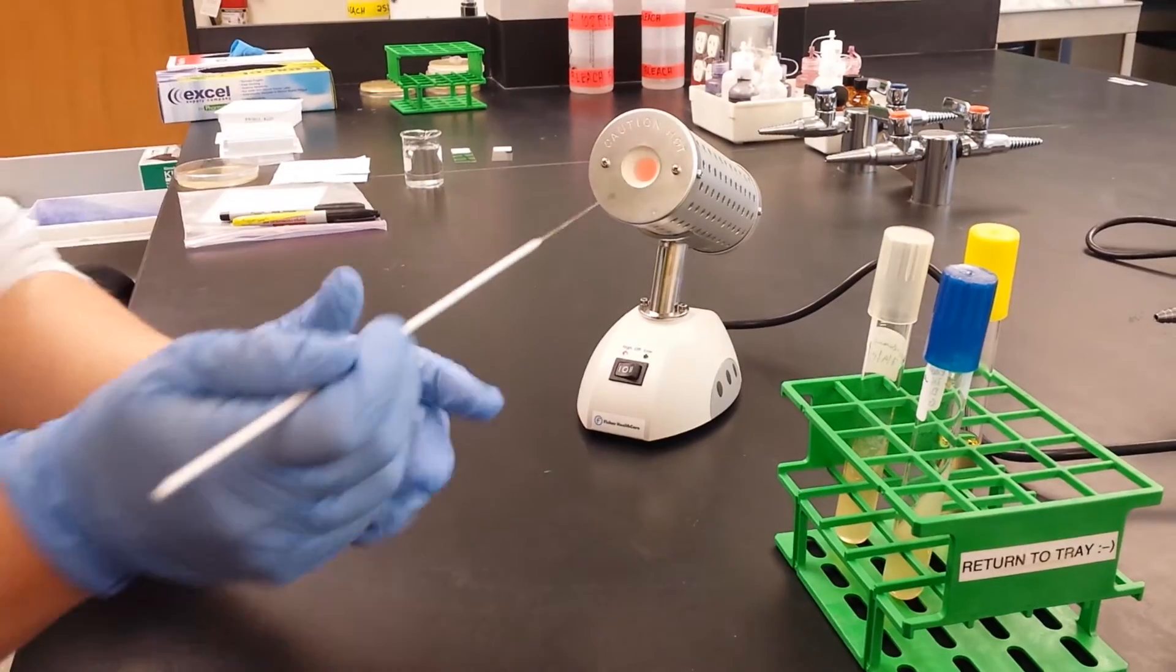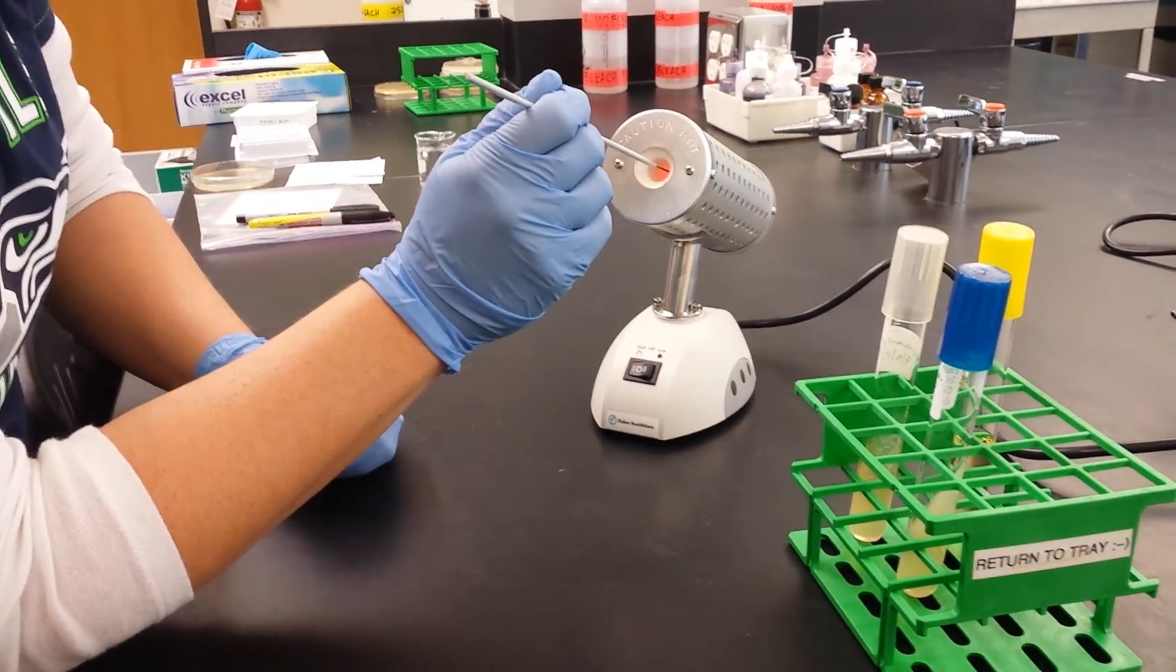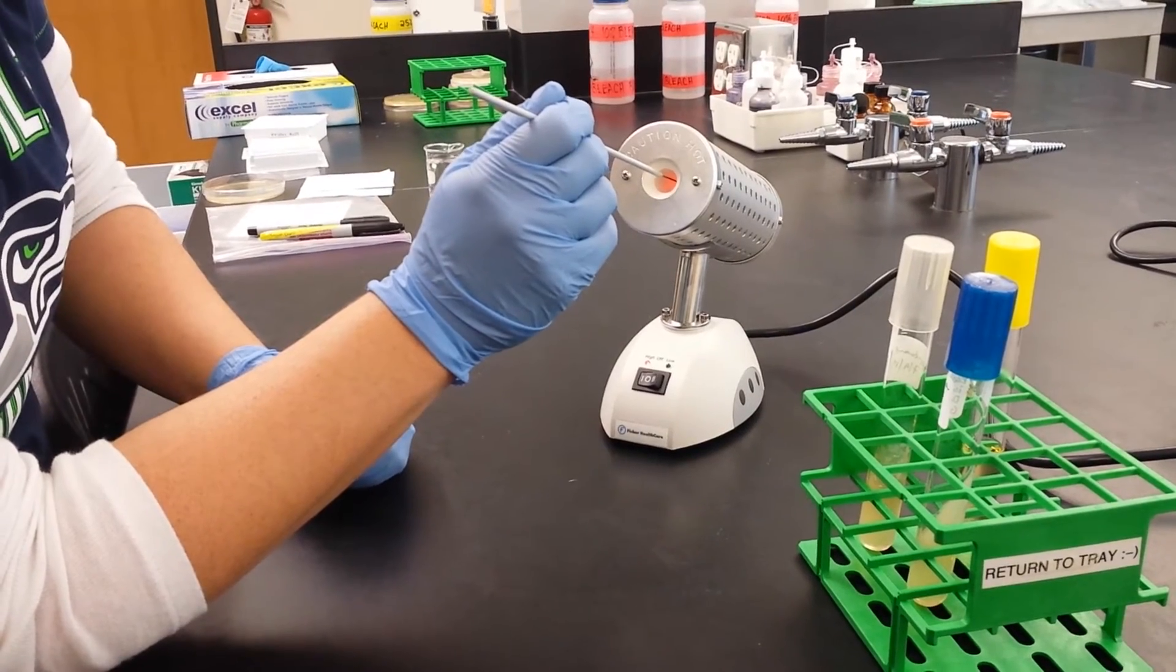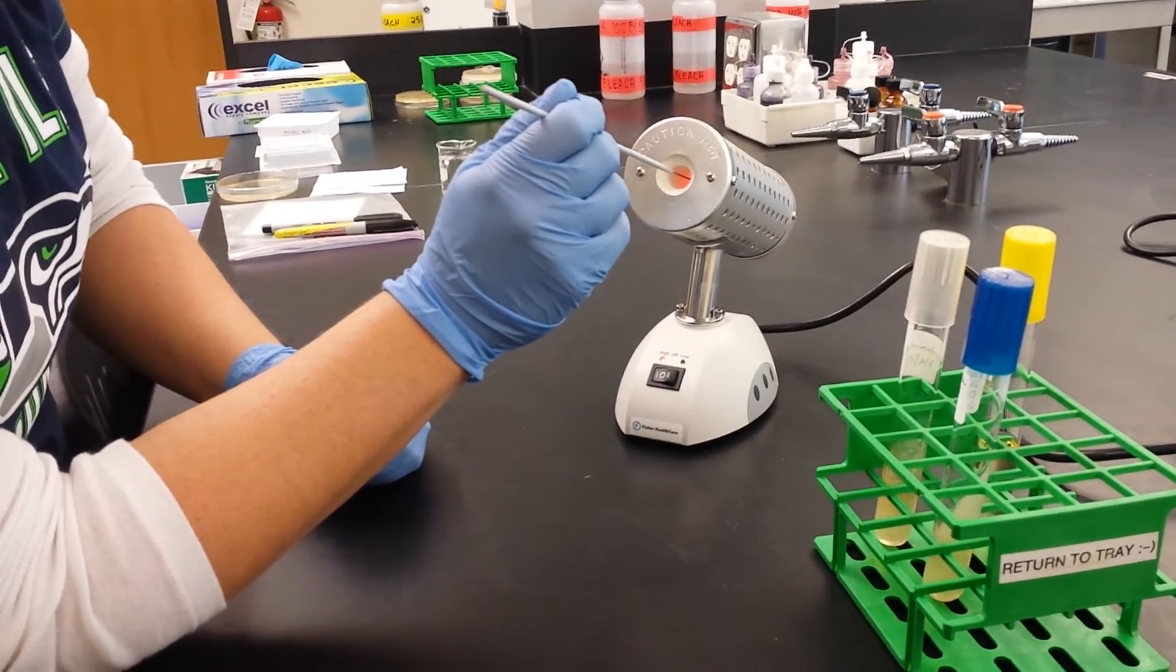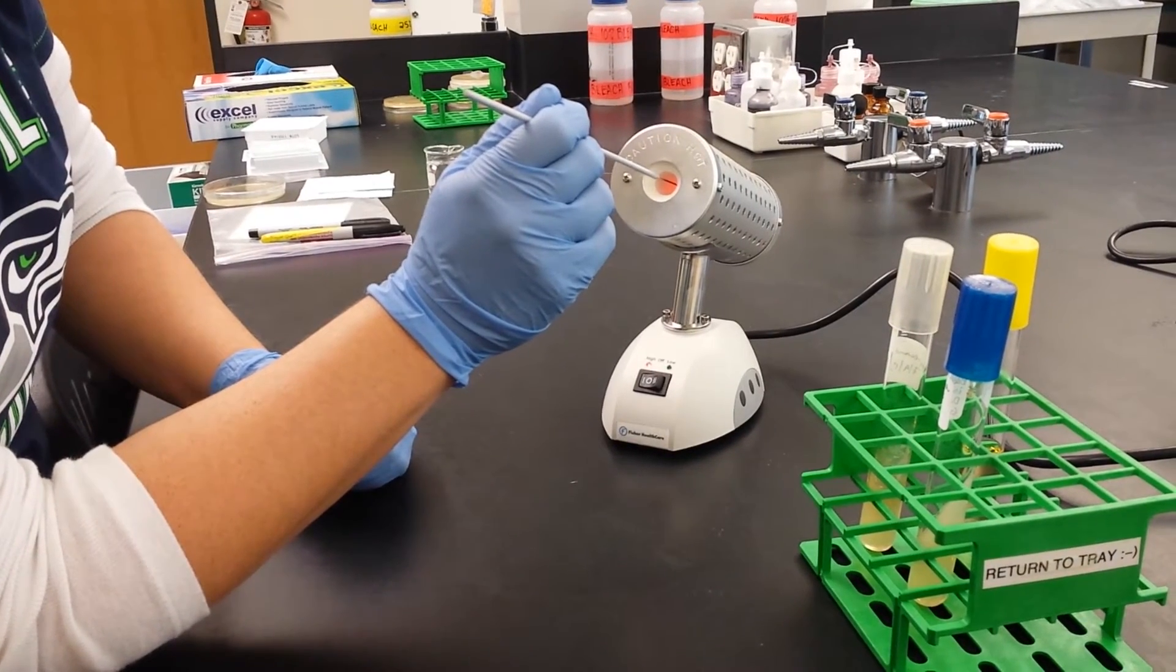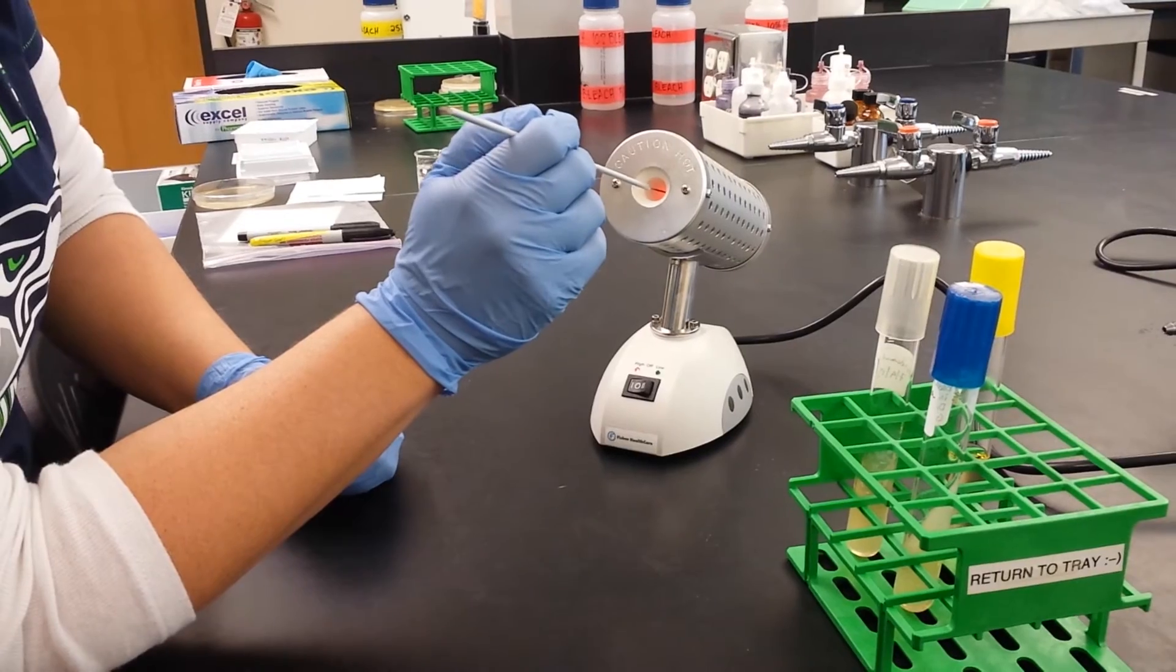So into the Bacti loop it goes again. Put it in there and count to 10. 1001, 1002, 1003, 1004, 1005, 1006, 1007, 1008, 1009, 1010.